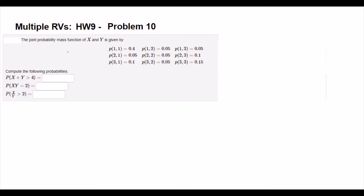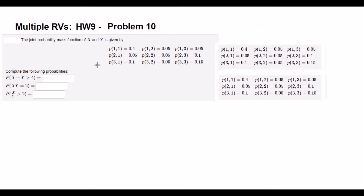Problem number 10. The joint probability mass function of x and y is given by this function. Compute the following probabilities. Part A is asking probability that x plus y is greater than 4. So 1 plus 1 is 2 (not greater than 4), but 2 plus 3 is 5, 3 plus 2 is 5, and 3 plus 3 is 6 — these are greater than 4. Those three probabilities sum to 0.1 plus 0.05, giving 0.30. Part B is asking probability that x divided by y equals 2. Those values where x/y equals 2: probability sums to 0.05 plus 0.01.